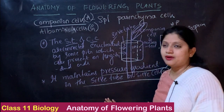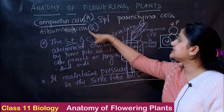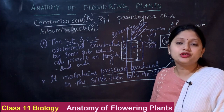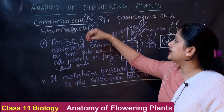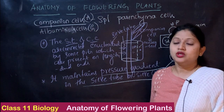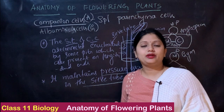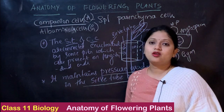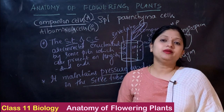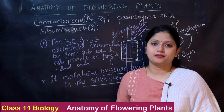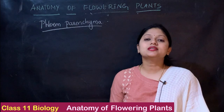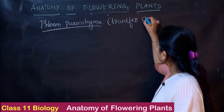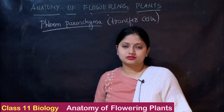In angiosperms, these are called companion cells; in gymnosperms, they are called albuminous cells. This is the second element of the phloem. The third element is the phloem parenchyma. Phloem parenchyma are also called transverse cells, and they are usually present at the ends of the sieve tubes.